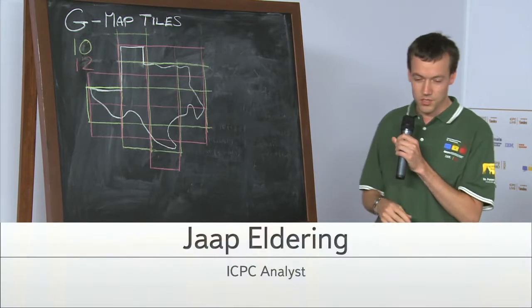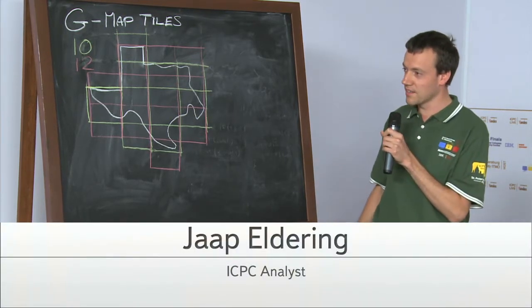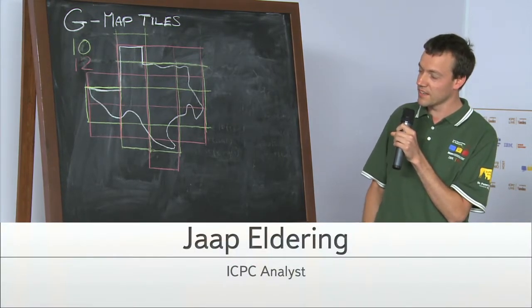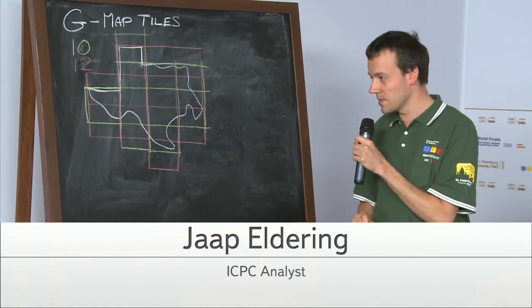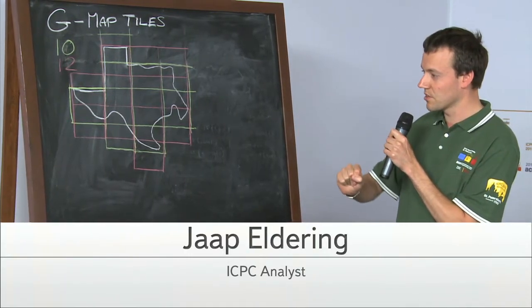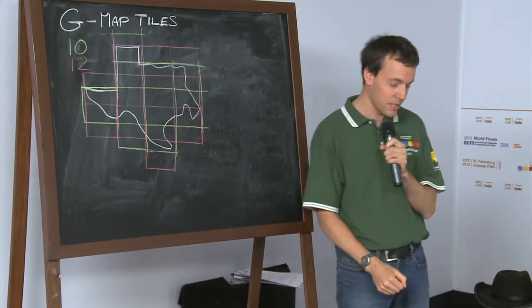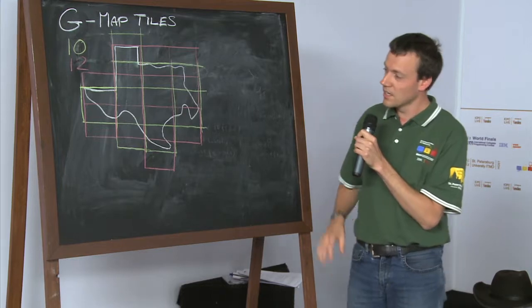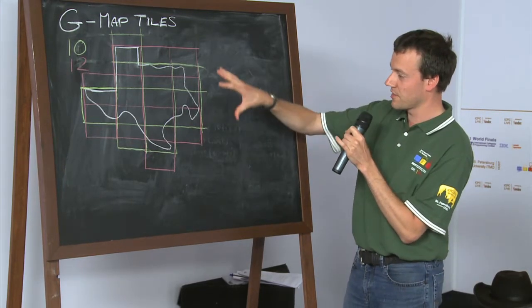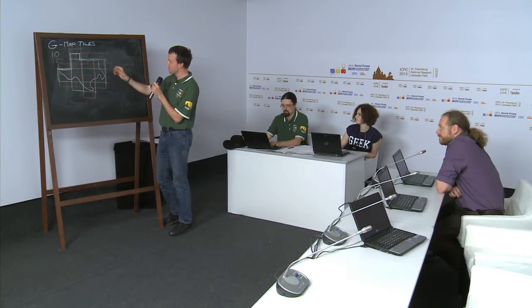Okay, but let me first just describe the problem also for the audience that haven't seen it yet. So you get a country or so. In this case, they showed the example from the problem statement was the state of Texas in the US. So this is drawn in white. It has a certain shape.